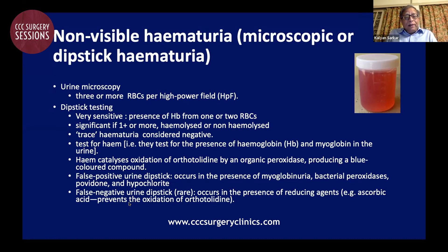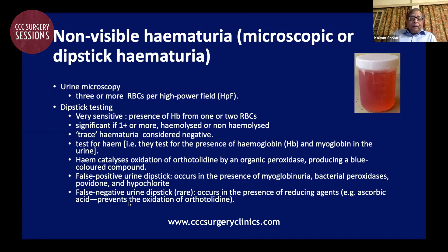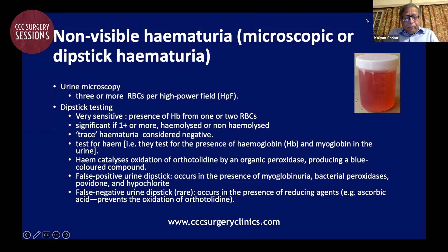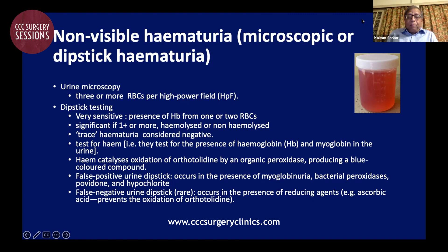Dipstick testing of the urine for both hematuria and infection has become extremely advanced. For the detection of hematuria, the chemical reaction is the oxidation of orthotolidine by an organic peroxidase, and the heme of hemoglobin catalyzes this oxidation, producing a blue-colored compound. This is an extremely sensitive test — it can detect the presence of hemoglobin from one or two red blood cells. It is considered significant if the dipstick test is one-plus or more, and it detects both hemolyzed and non-hemolyzed blood.